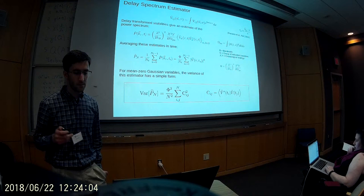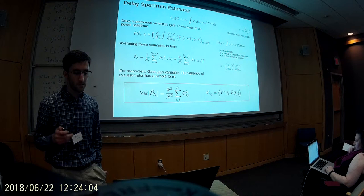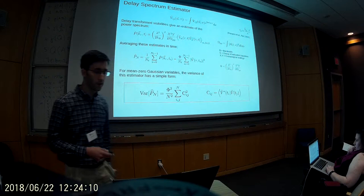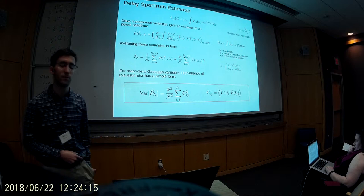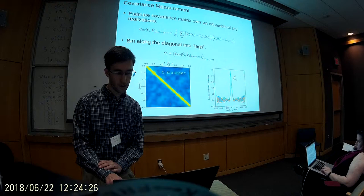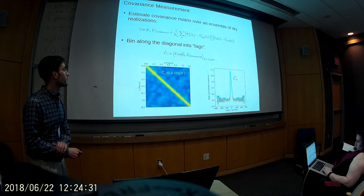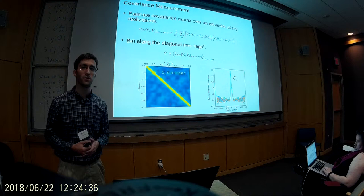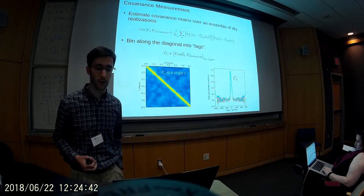It turns out that for mean-zero Gaussian variables — so if the sky is Gaussian, like I have — then the variance just ends up being the sum of the squares of all the terms of the covariance matrix. So to understand the sample variance, we need to look at the covariance of visibilities over time. I ran a series of simulations and directly measured the covariance by averaging over an ensemble of sky realizations. This is something we can't do with data, because we only have one sky to work with.